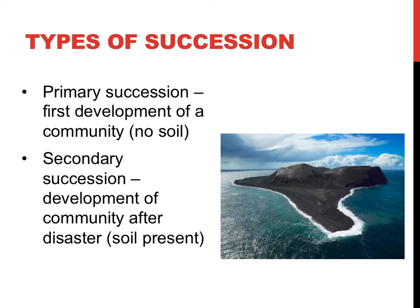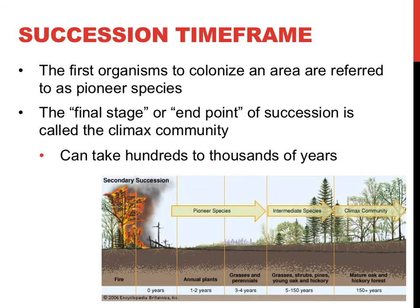Secondary succession occurs when life has previously existed in an area — after a forest fire wiped out all the life in a region, for example. If life has existed in a habitat before, the events of succession often take much less time to occur. When a new ecosystem develops or reestablishes itself, the process usually occurs in a specific pattern.